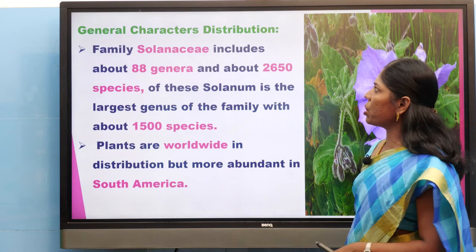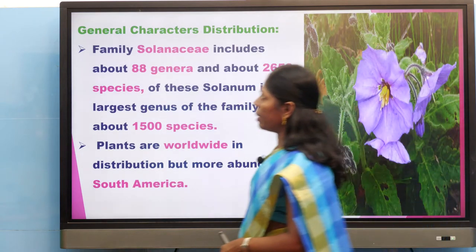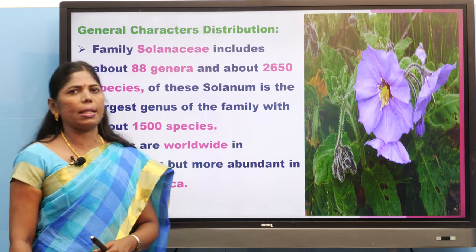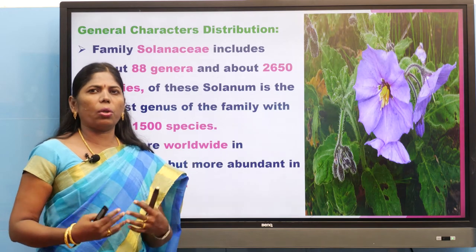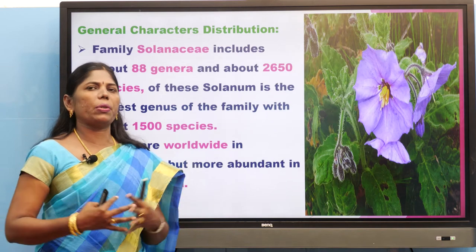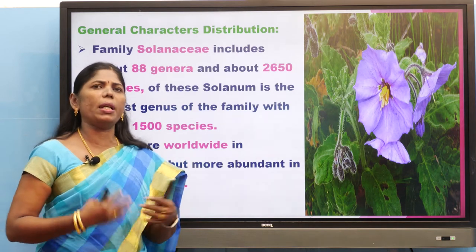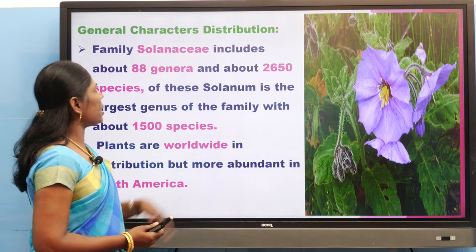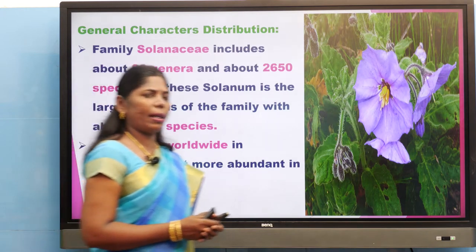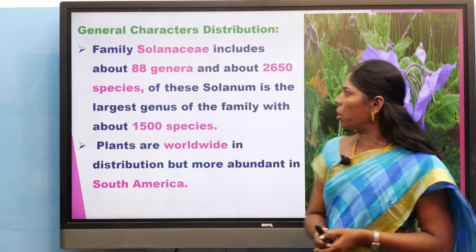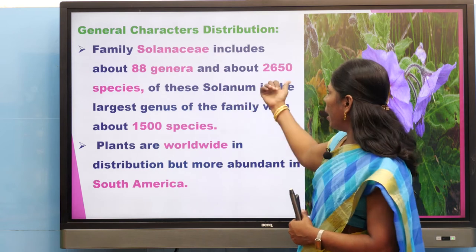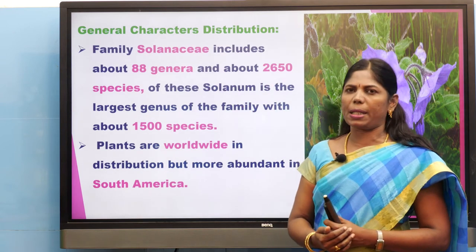Next we are going to see the general characters — habit, root, stem, leaf, inflorescence, flower, calyx, corolla, androecium, gynoecium, fruit, and seed. In the distribution of Solanaceae, it has 88 genera and 2650 species.